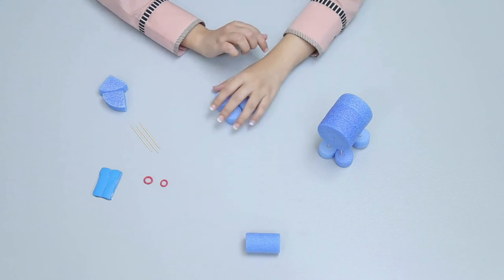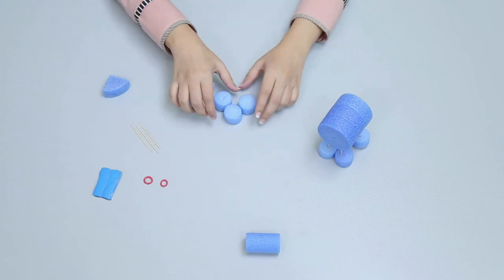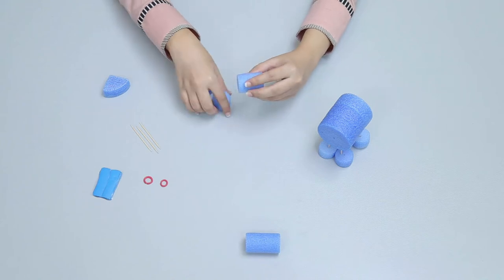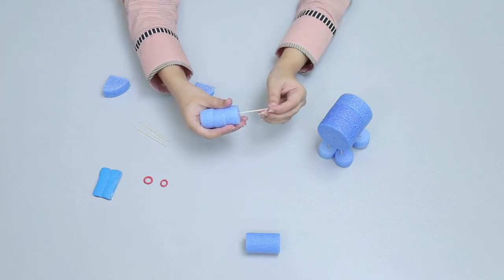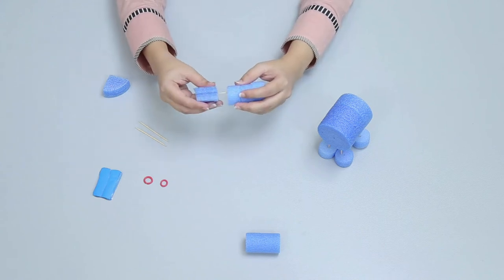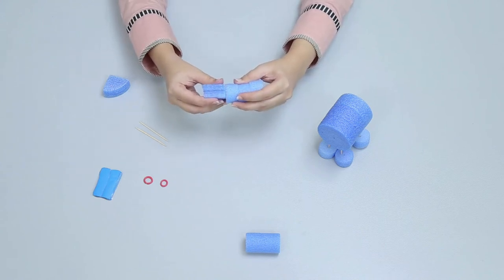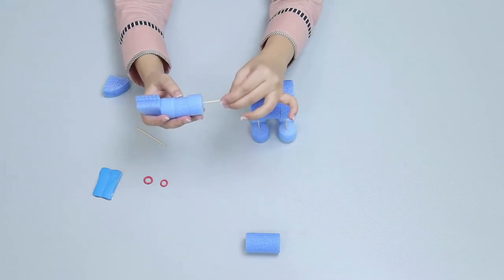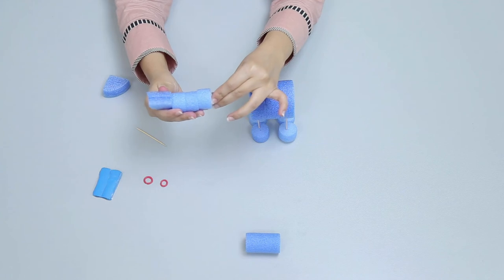Take three small foam wheels and a foam quarter and attach them together with a toothpick. Now attach this at the back side of the big foam cylinder to make the tail.